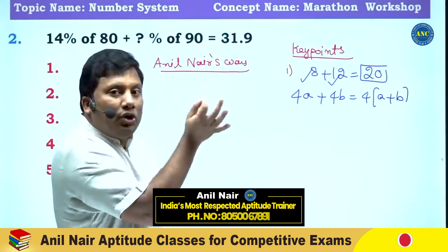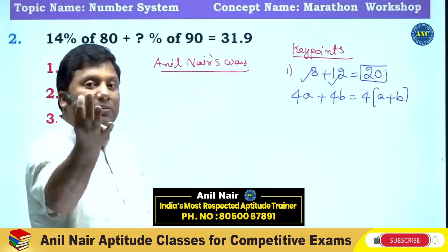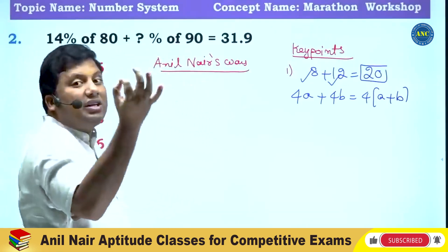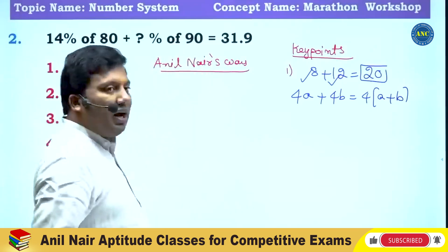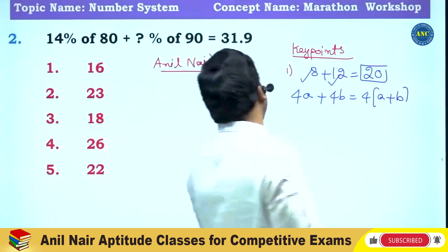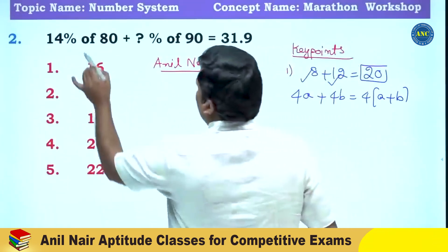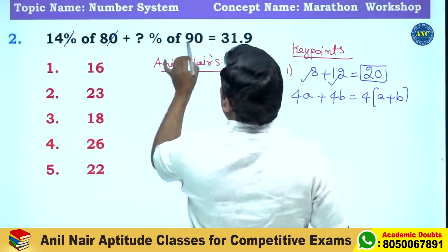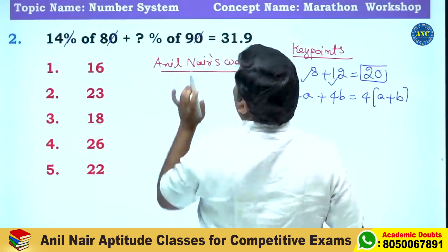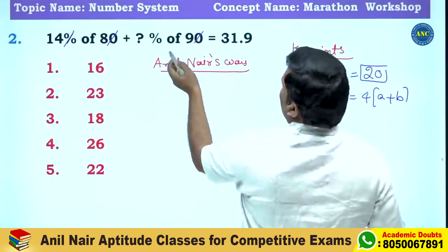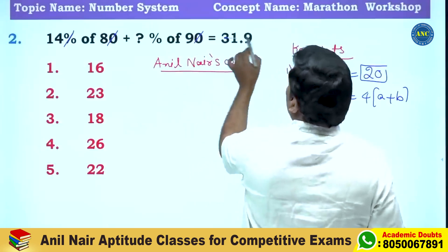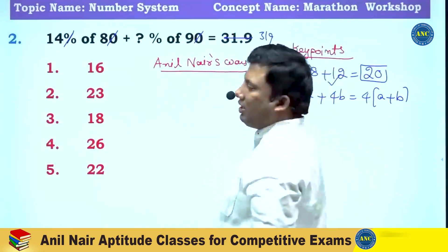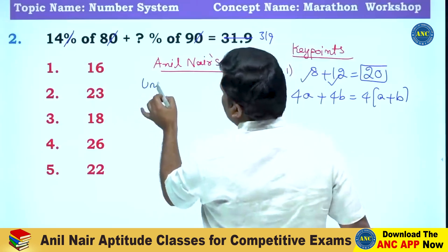I will use this concept extensively in all data interpretation and calculation-based problems. Now, Anil Nair's way of solving: percentage is divided by 100, so one zero cancels from 80 and one zero cancels from 90, making the answer 319.